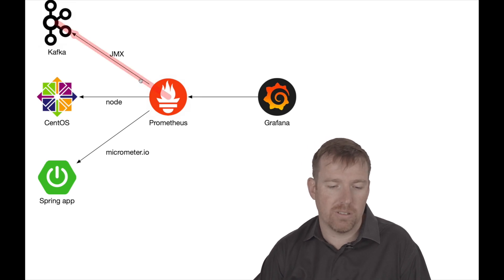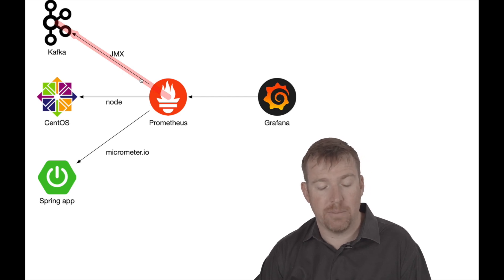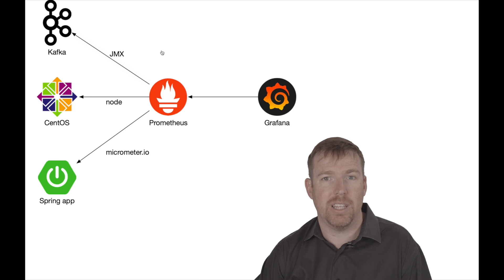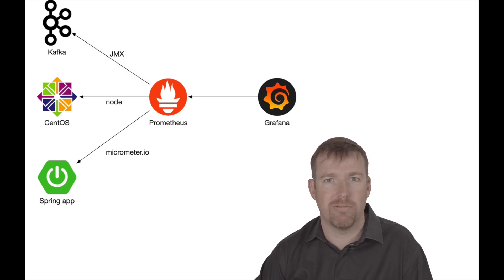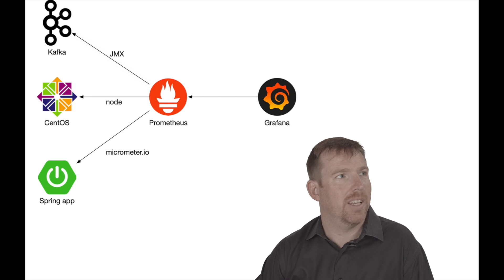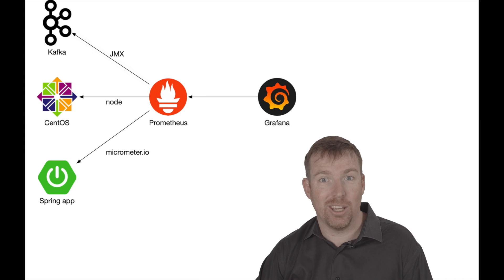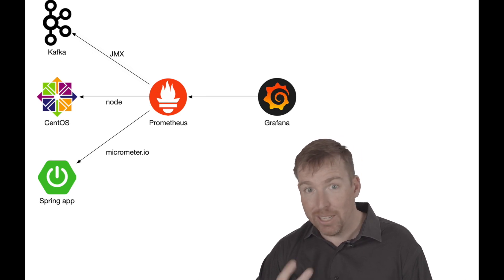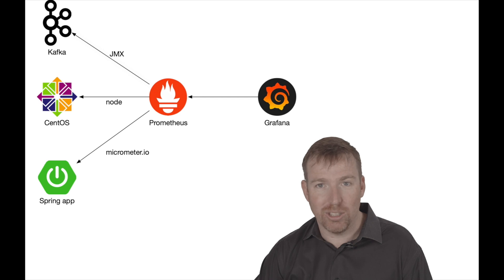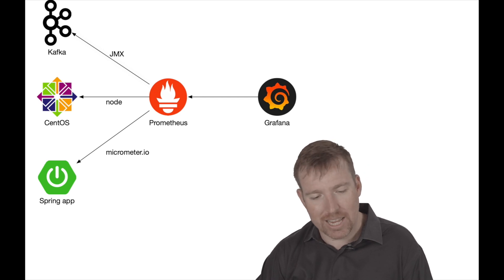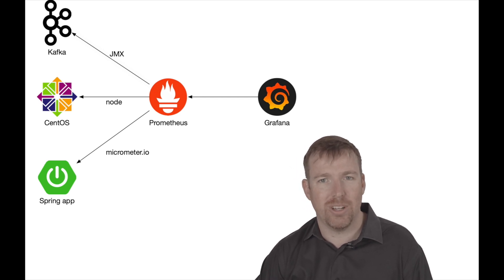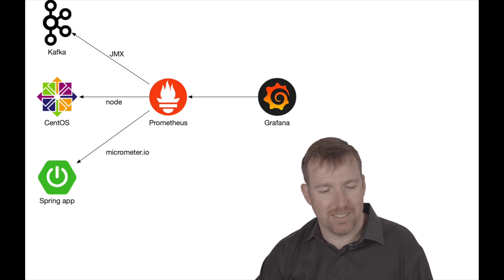You'll notice that the arrows are pointing to the system — that's not a mistake. Prometheus is basically scraping these systems; that's typically how it's used. What I really love about that is: imagine you have some rogue service. If the data was flowing the other way and you screwed something up, you could potentially give yourself a denial-of-service attack on the thing that is giving you visibility to what's going on — and you don't want that. So Prometheus will scrape all these endpoints in its own time and it won't blow itself up like that.